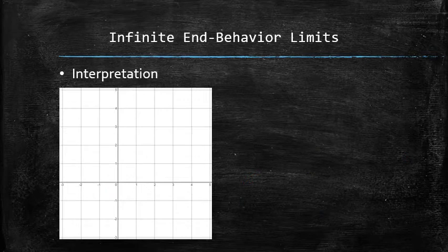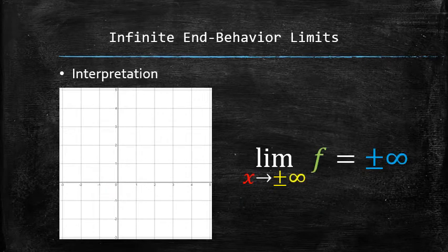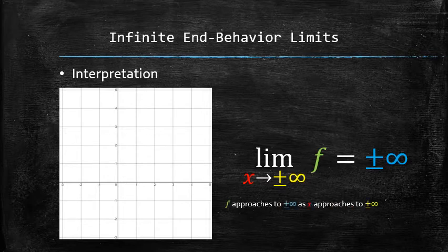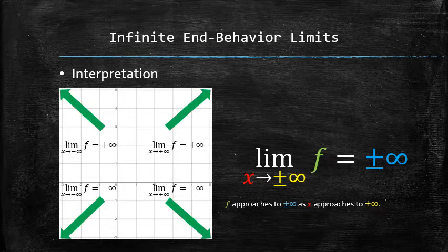To interpret an infinite end-behavior limit, we would first read it as: f approaches positive or negative infinity as x approaches positive or negative infinity. Then we can draw the behavior according to the statement in one of the following four ways.